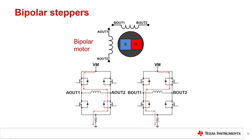In this presentation, the focus will be on the circuitry required to drive bipolar stepper motors. For bipolar steppers, two H-bridges allow the current to flow in either direction through the winding. The FETs in the H-bridge resemble the letter H. The direction of the current determines the polarity of the magnetic field created by that winding.